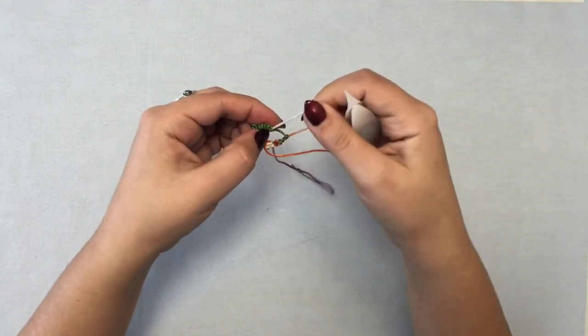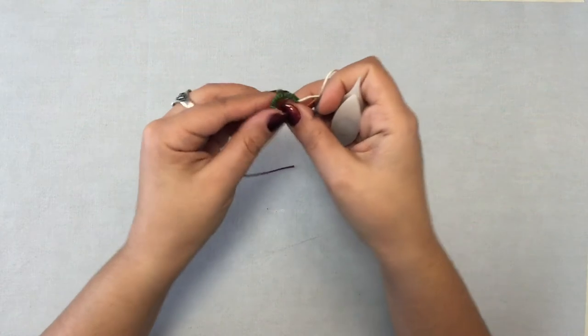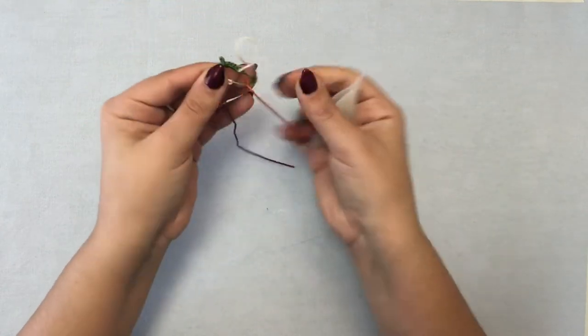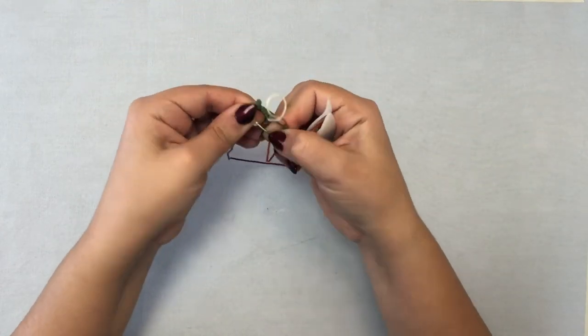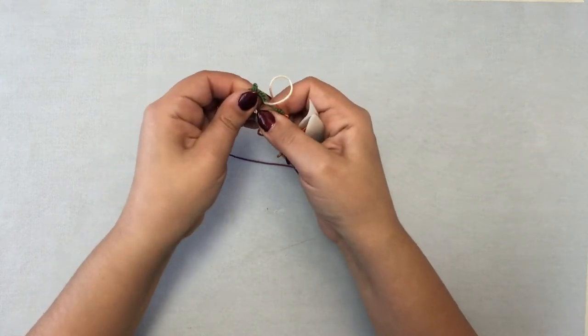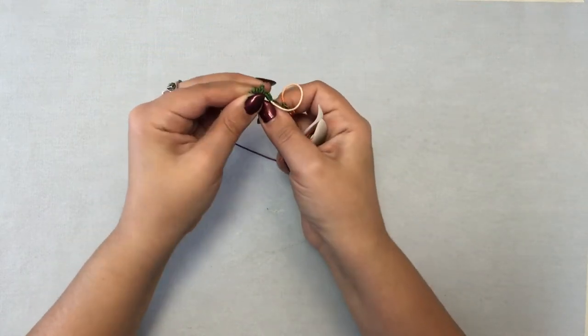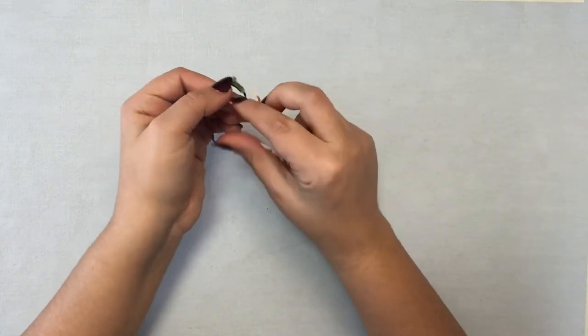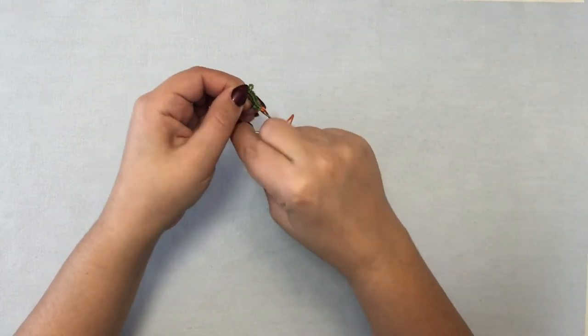So now I've got where my picot is I've got all this thread here and now when I pull the beginning of my ring here from my very first stitch at the base of that all that thread will now come where I want it to be.